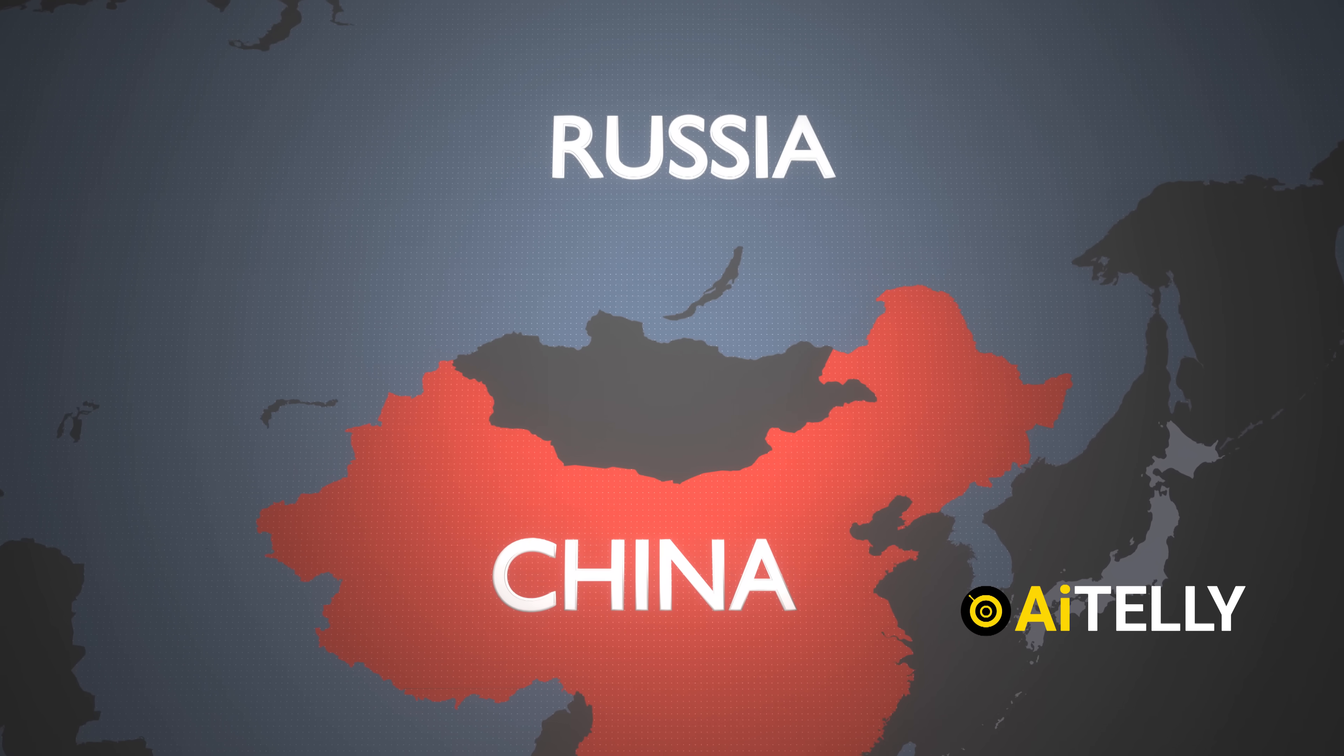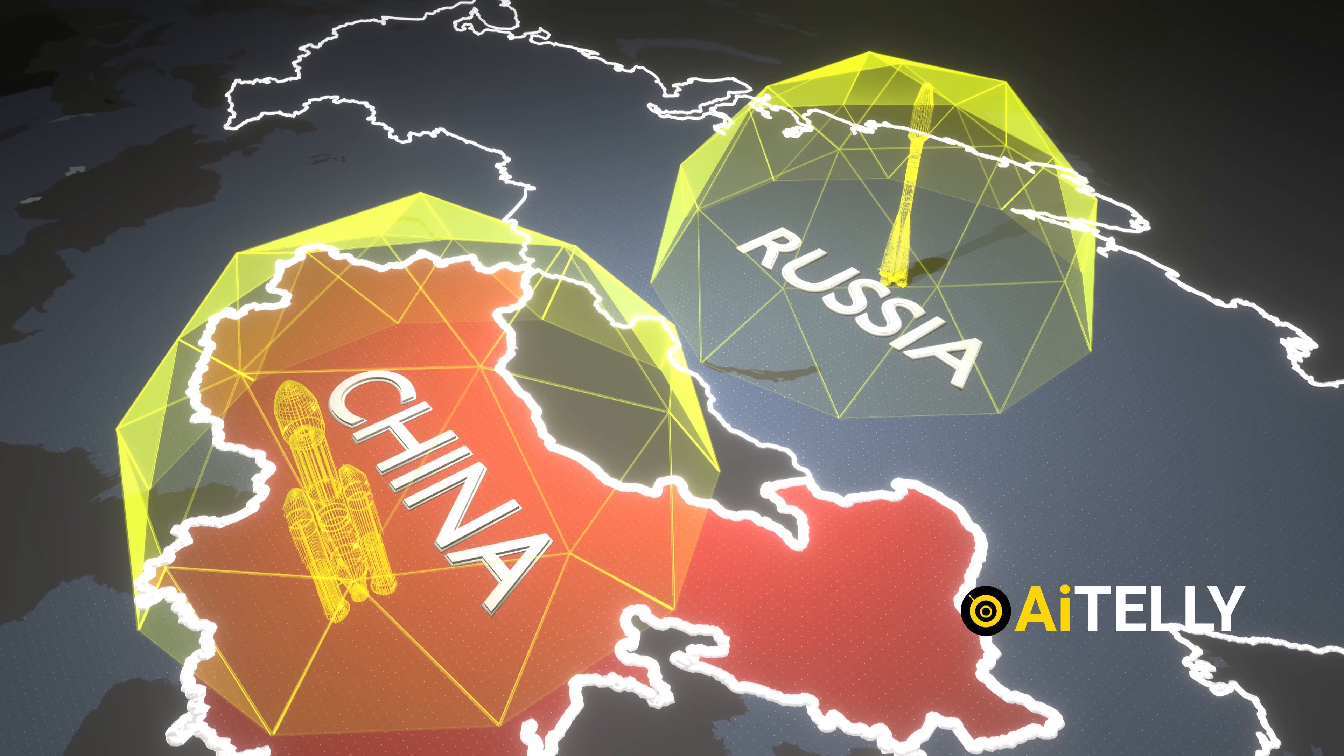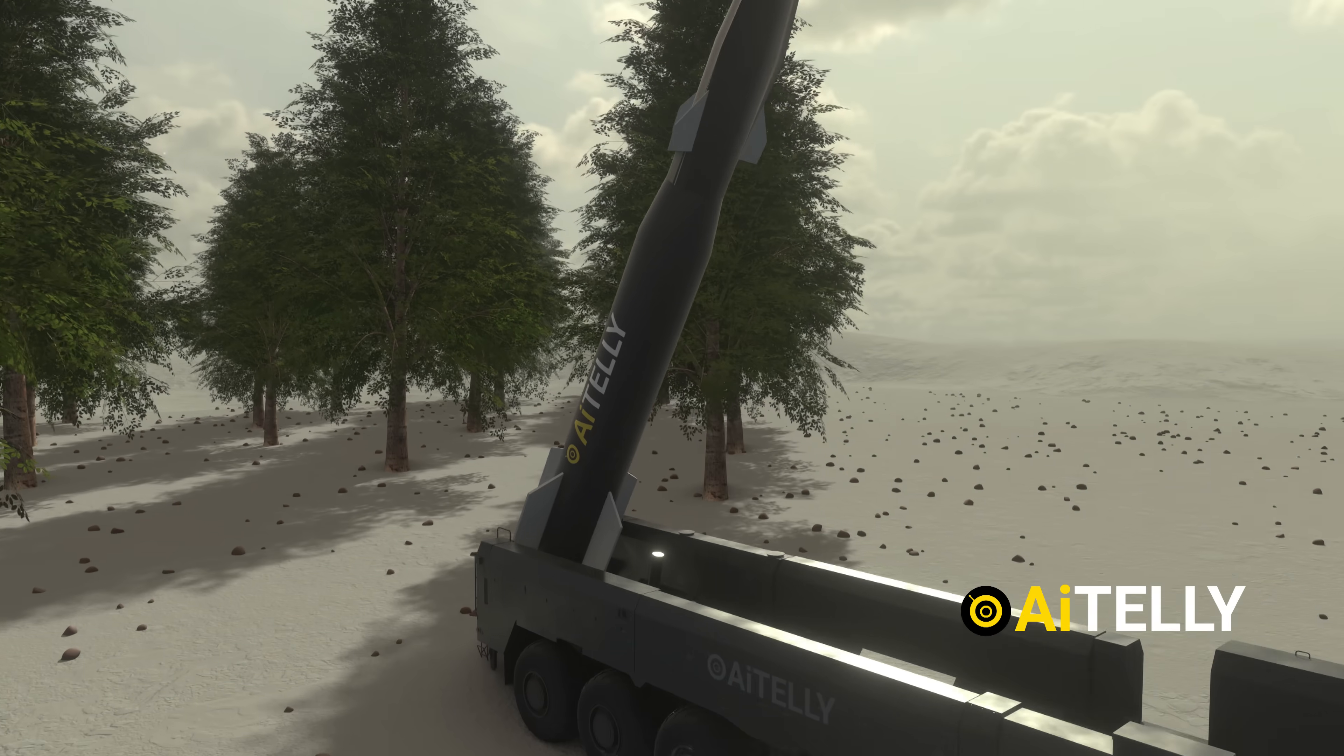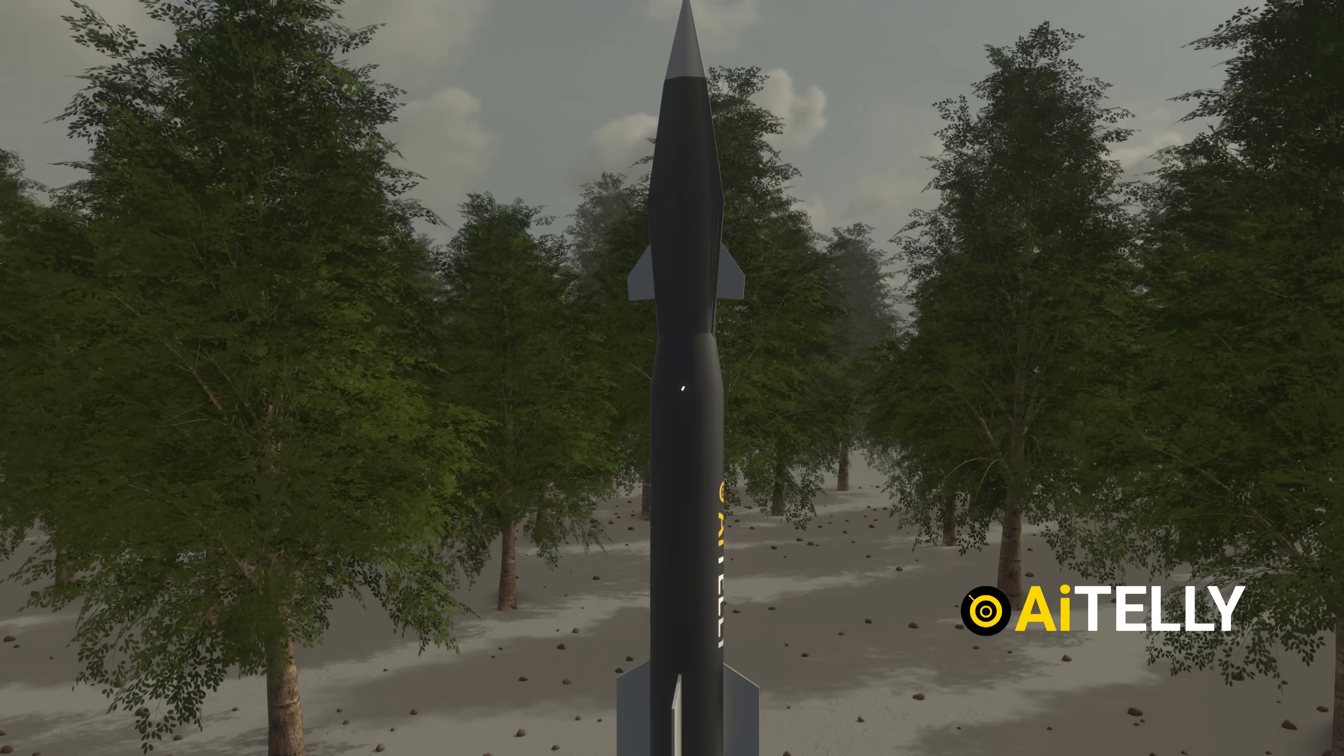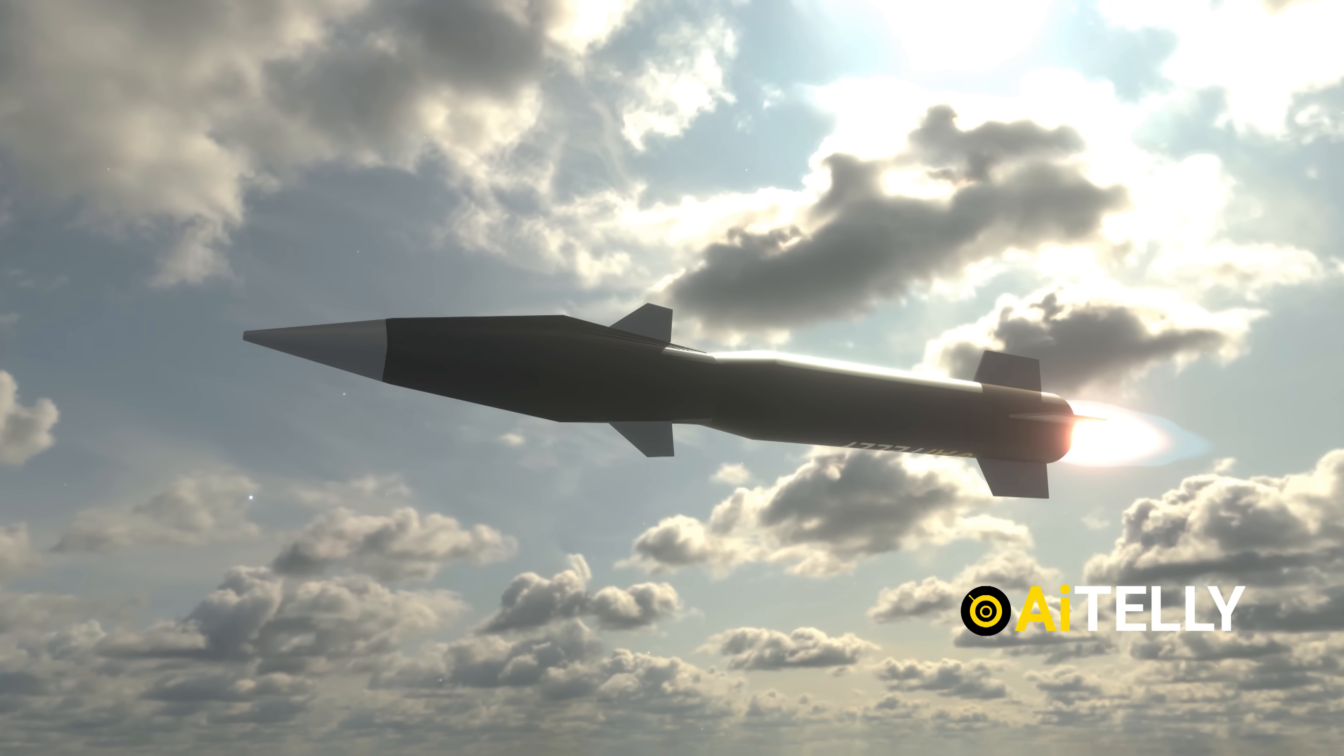But what about the other superpowers? China and Russia are both active participants in the space race, developing advanced technologies such as the Fractional Orbital Bombardment System. This sophisticated missile delivery system developed by China enables a nuclear weapon or other warheads to be placed into a partial orbit around the Earth and then de-orbit it to strike targets from unexpected directions.